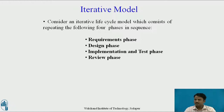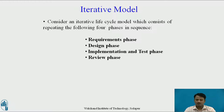Consider an Iterative Life Cycle model, which consists of repeating the following four phases in sequence. The first phase is the Requirement Phase, in which the requirements for the software are gathered and analyzed. Iterations should eventually result in a Requirements Phase that produces a complete and final specification of requirements.